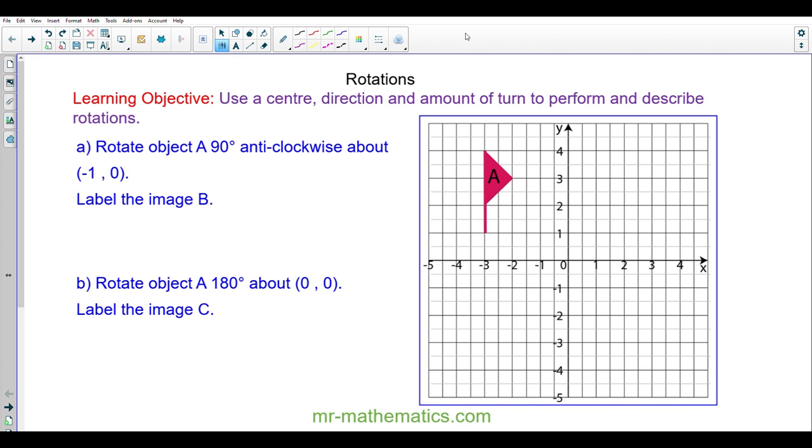Hello and welcome to our lesson on rotating objects on a grid. To rotate an object on a grid we need three things: a direction, an amount of turn, and a center. When you perform this yourself, you're also going to need tracing paper.